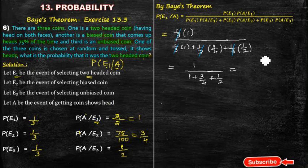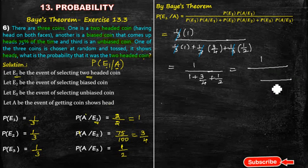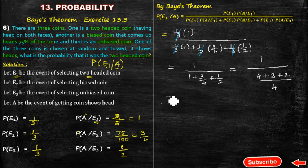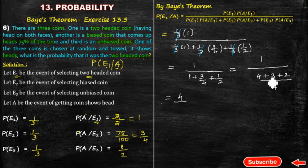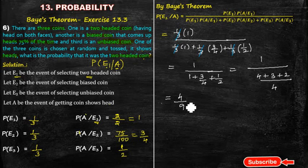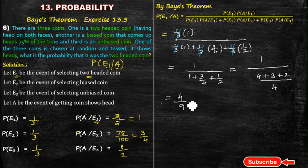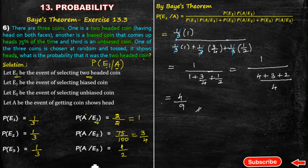Taking LCM of 4: the denominator becomes (4 + 3 + 2)/4 = 9/4. So P(E1|A) = 1 ÷ (9/4) = 4/9. The answer is 4/9. You understood, children? Thank you.